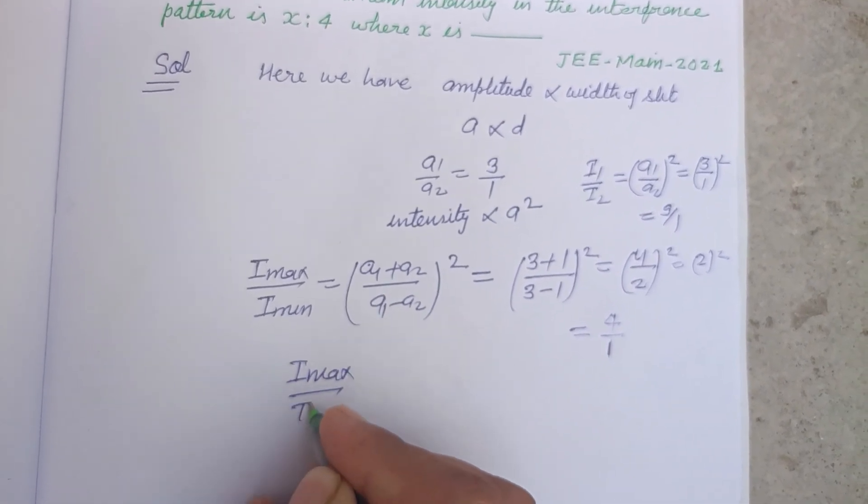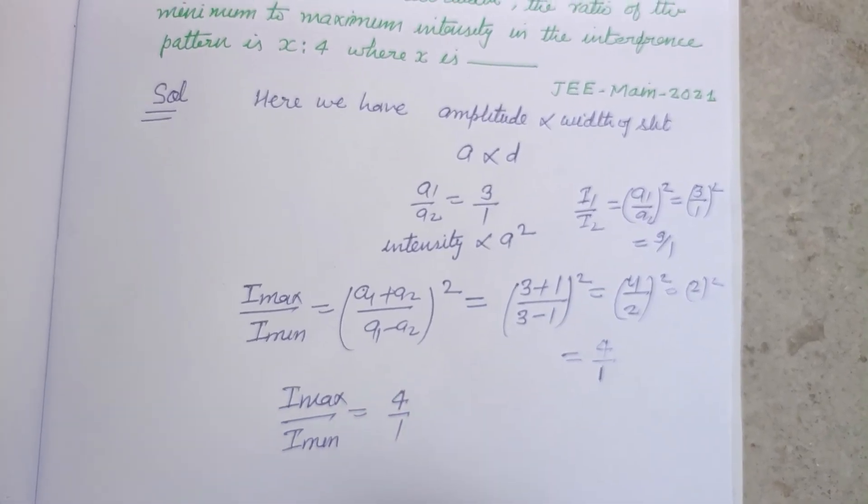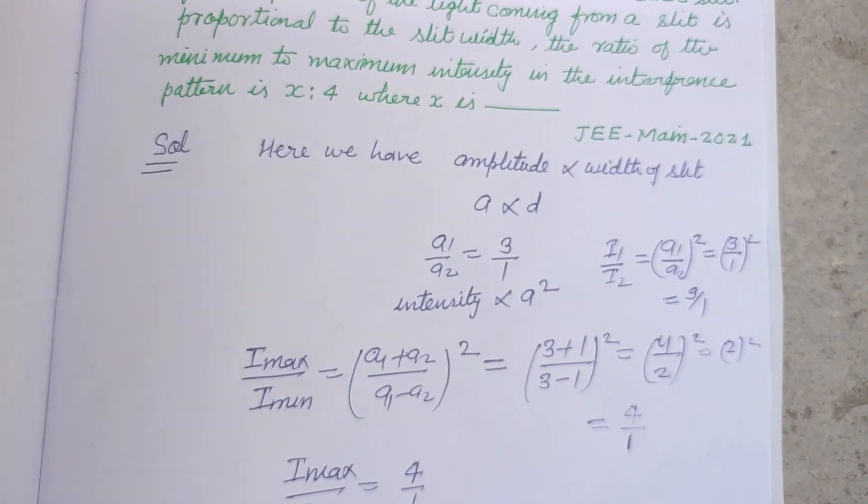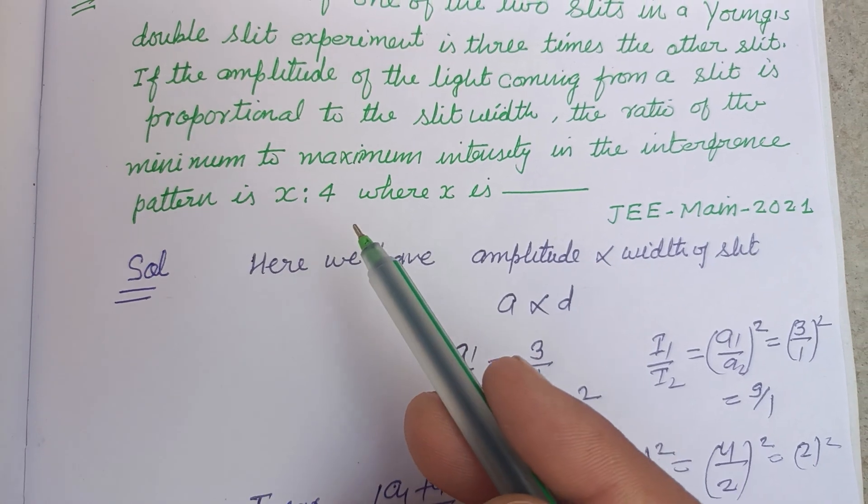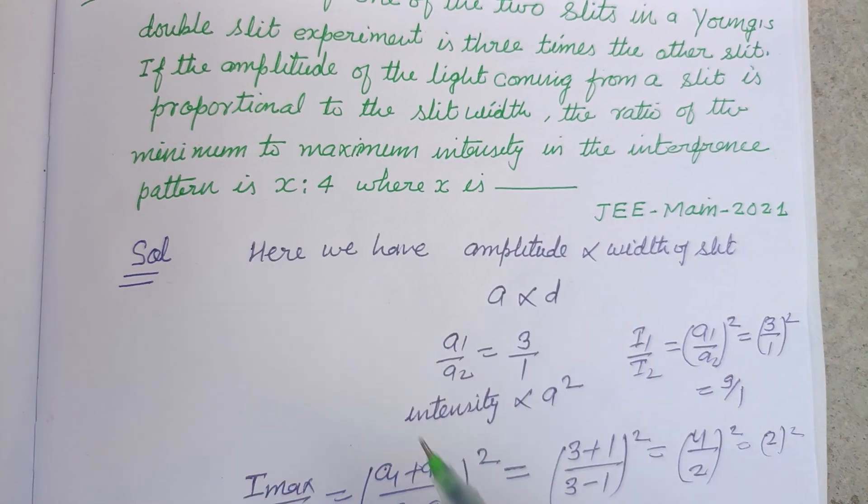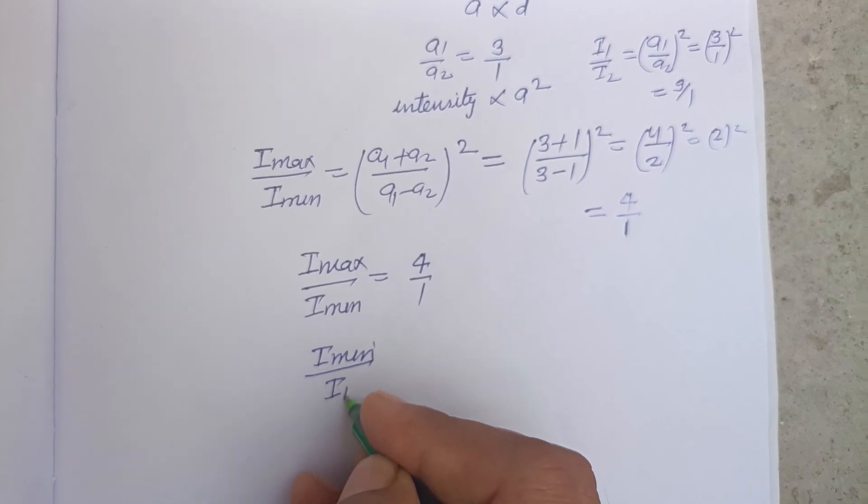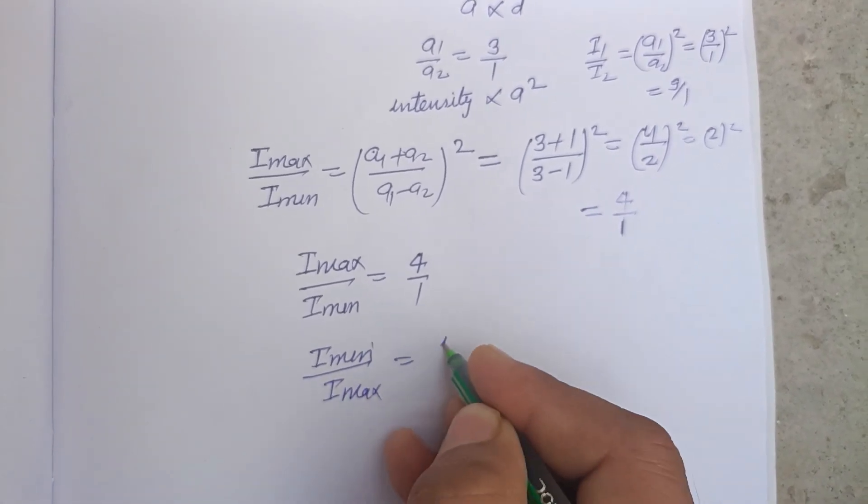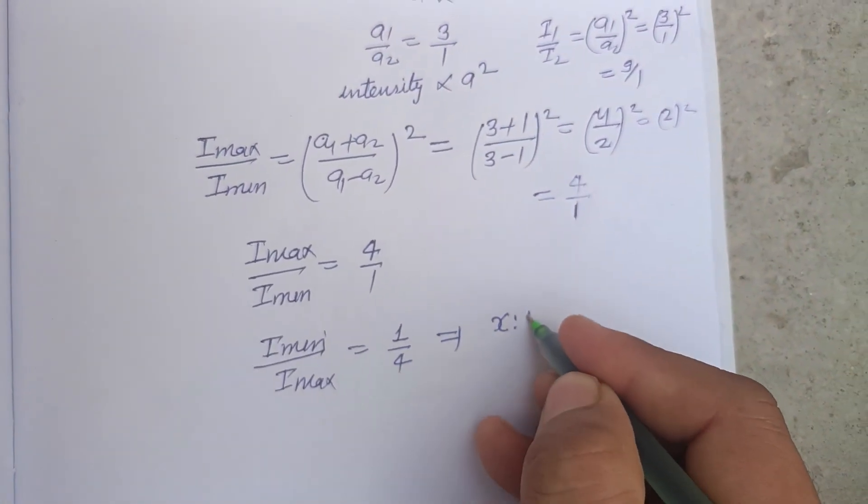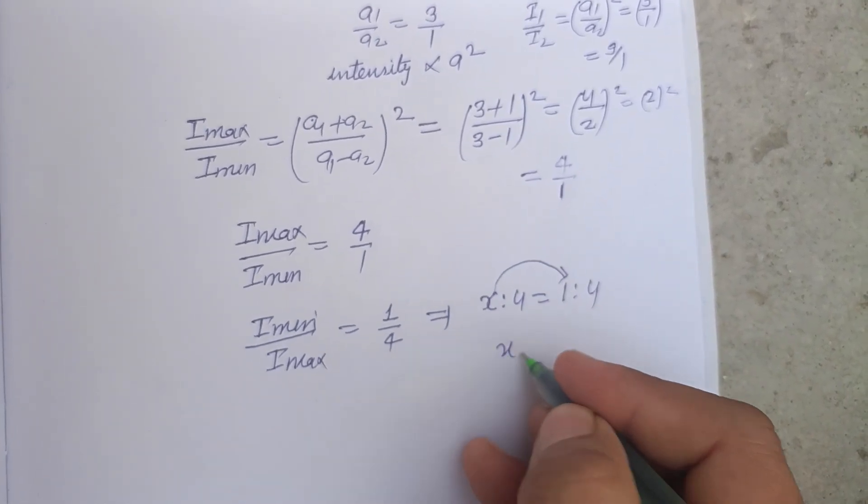So I maximum over I minimum is 4 ratio 1. Here the question is saying that the ratio of minimum to maximum intensity, so we reverse it. I minimum over I maximum equal to 1 ratio 4, and it is given to us X ratio 4. X ratio 4 equal to 1 ratio 4, therefore value of X equal to 1.